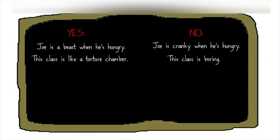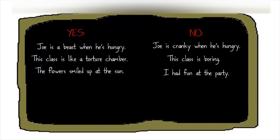Now that you have these first few examples, show a few more, gradually adding more that stray from the basic level. On the yes side, I might add: 'The flowers smiled up at the sun.' And on the no side: 'I had fun at the party.' I'm starting to not do such an even parallel between the two because I want to broaden their understanding of this concept. I'll add: 'My computer refuses to cooperate.'